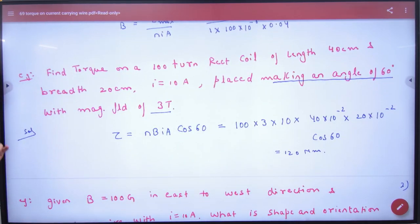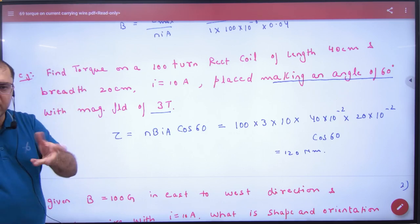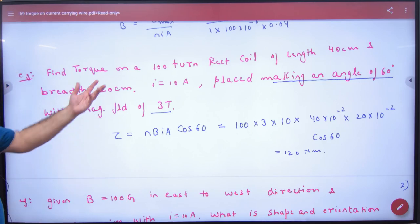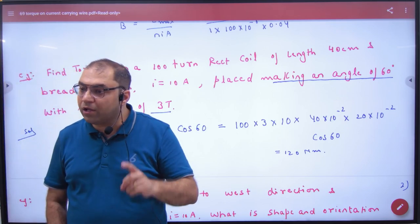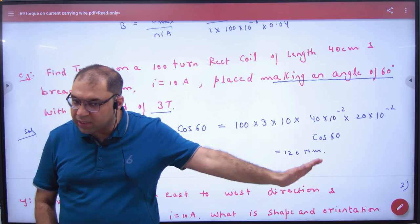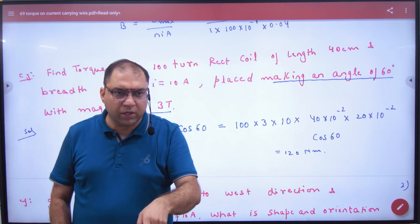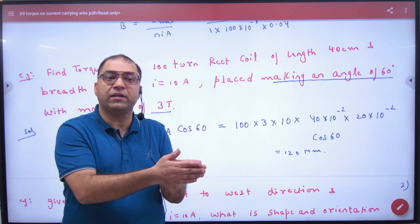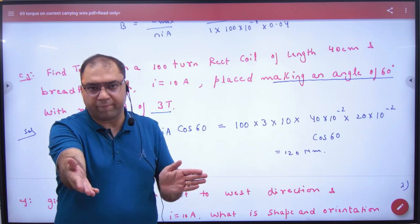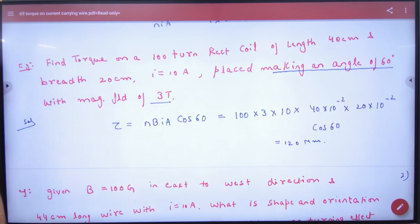Find torque on 100 turn rectangular coil. 100 turns. Rectangular coil of length 40 cm and breadth given. So area will be length times B, and number of turns also known, current known, making an angle of 60 degrees with magnetic field of 3 tesla. So which angle has made? Loop has made with B. What has it said? Normal or perpendicular? No. Loop angle is in the formula of sine or cos. What will we put in cos? 60. Answer.